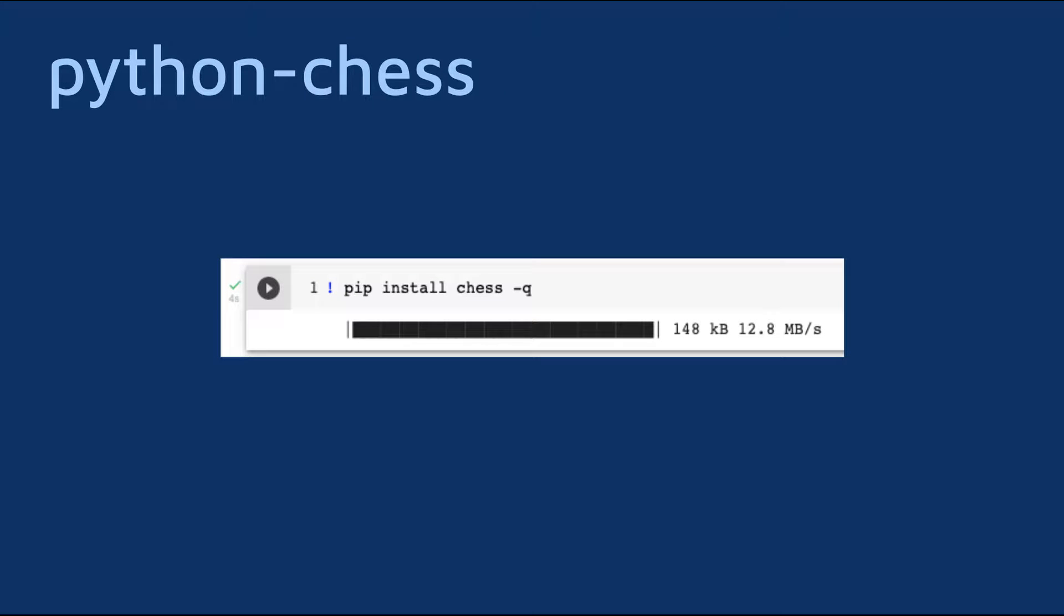In addition to the usual data science packages like NumPy, Pandas, and PyTorch, we'll also need the Python chess package to help us create and manage the chess game. This package will allow us to create a chess board, handle the pieces, enforce the rules, and more. To install the package, simply run the following command. With the package installed, we're ready to start the most difficult part of any data science project: preprocessing the data. Let's get started.